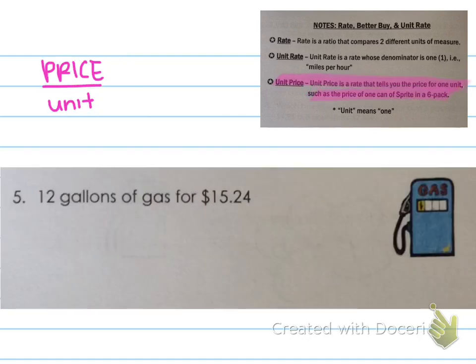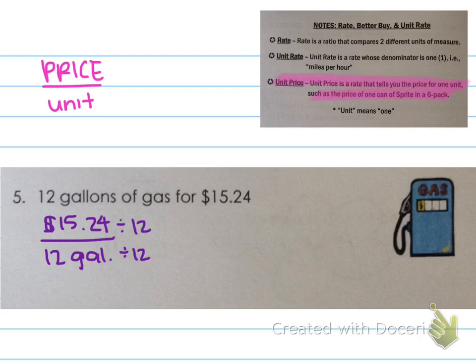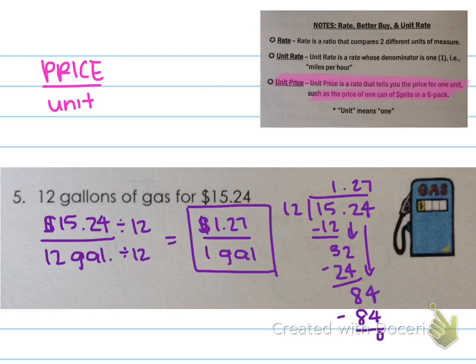12 gallons of gas for $15.24. Now remember when we set it up, we want the price on top as our numerator and the unit or the item as the denominator. So I have $15.24 for 12 gallons of gas. We want to find how much it is for one gallon of gas. So we need to get the denominator to equal 1, meaning we're going to divide by 12 on both top and bottom. So I want you to go ahead and pause the video and work it out on your own and then press play to check. The unit price here is $1.27 per one gallon of gas and I don't know about you, but I think going back to those prices would be fantastic.